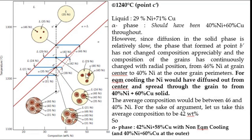In equilibrium cooling the center remains at the higher concentration solidified at the liquidus—46% nickel stays at the center, and the outer periphery is at 40%. That 40% should have been throughout the grain, but it does not happen because nickel cannot diffuse out. The average composition is between 46% and 40%, assumed to be 42%.